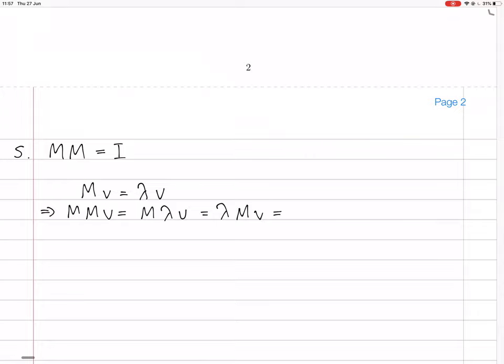which is the same as lambda times lambda V, which is the same as lambda squared V. Oh, so that implies that, because MM is I,